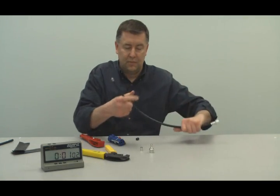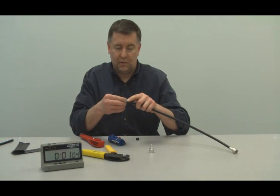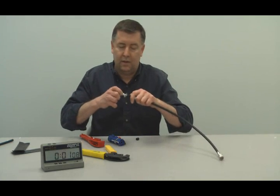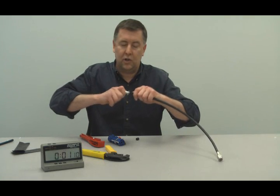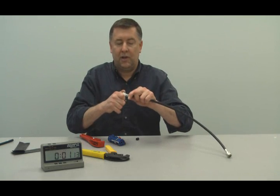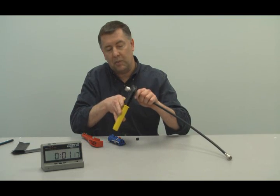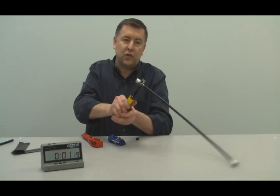Side two, slide the ferrule over the braid, bring the braid back. Connector snugly snaps onto the center connector, bring that ferrule up, use the crimp tool, crimp it right up close to the back of the connector.